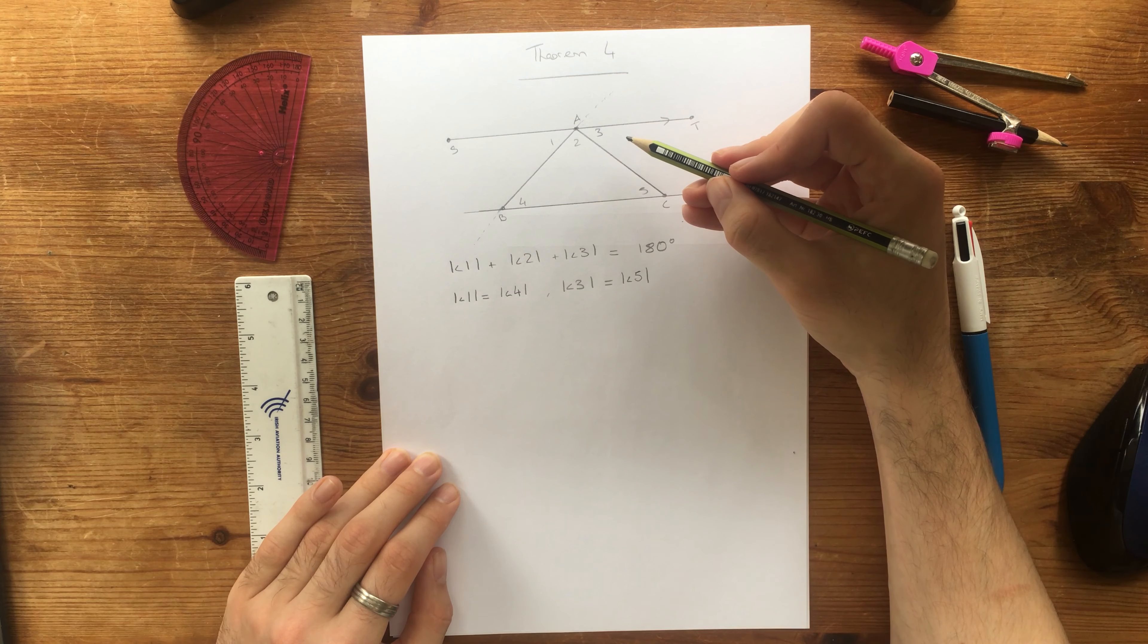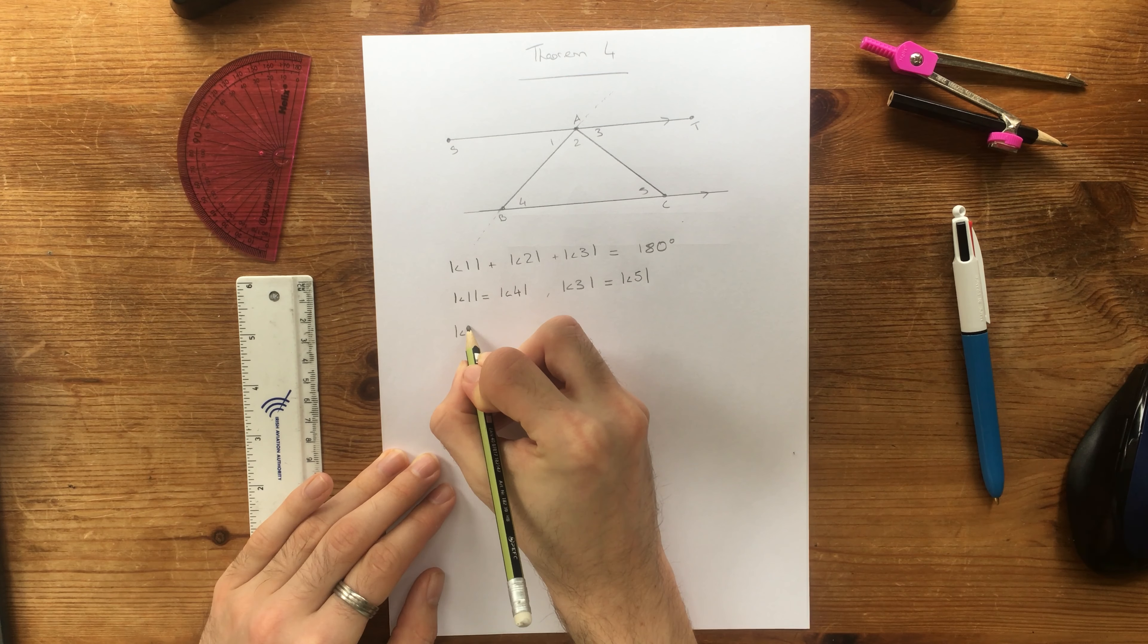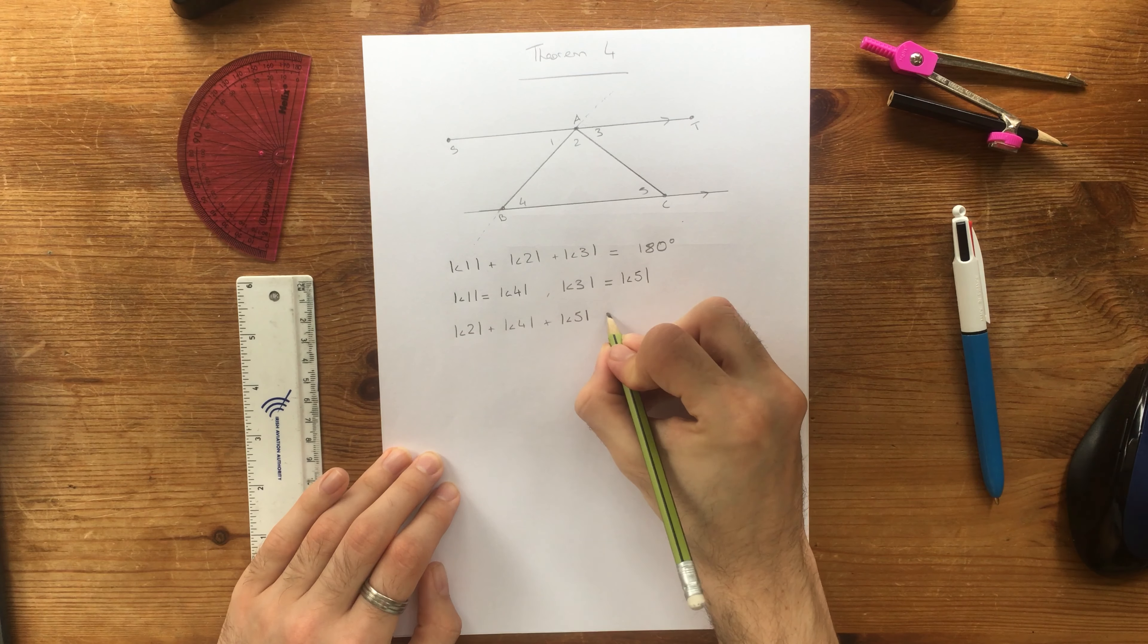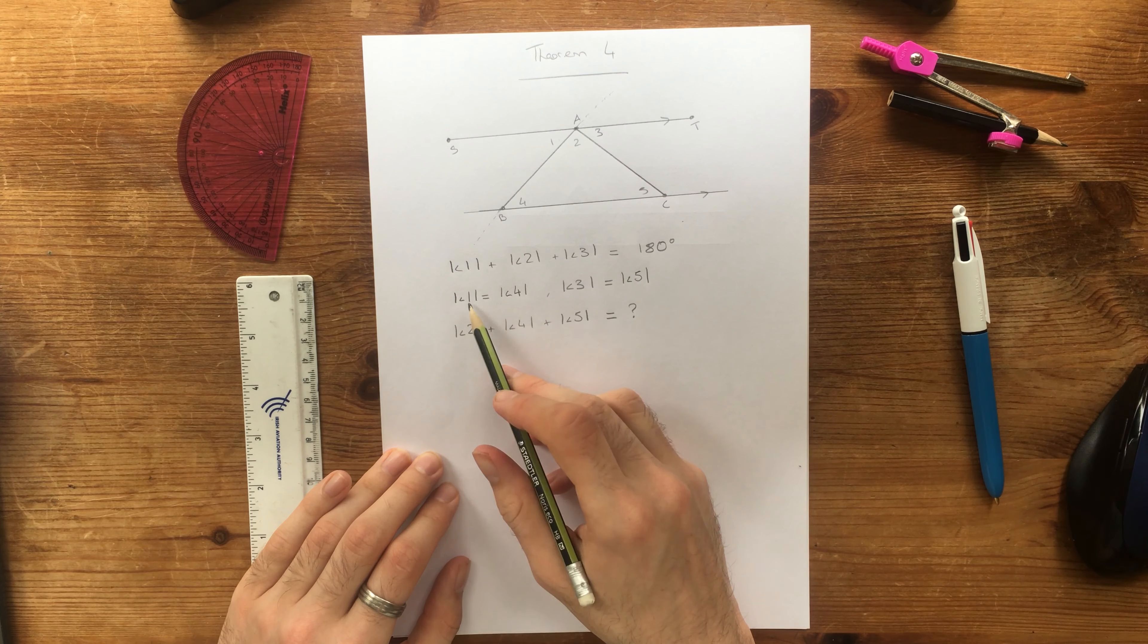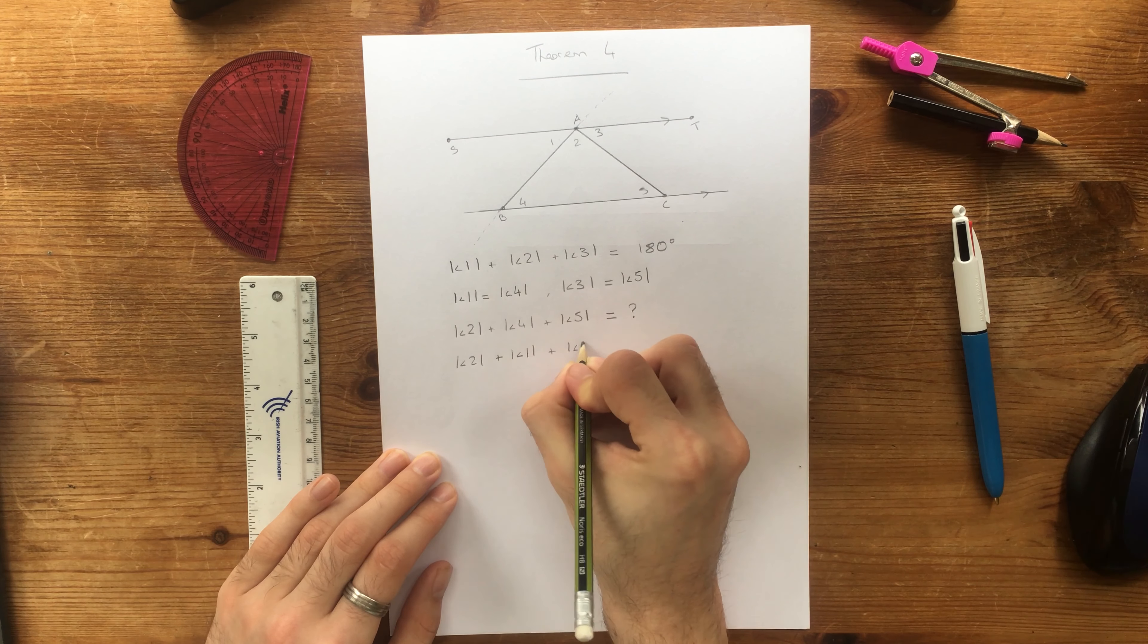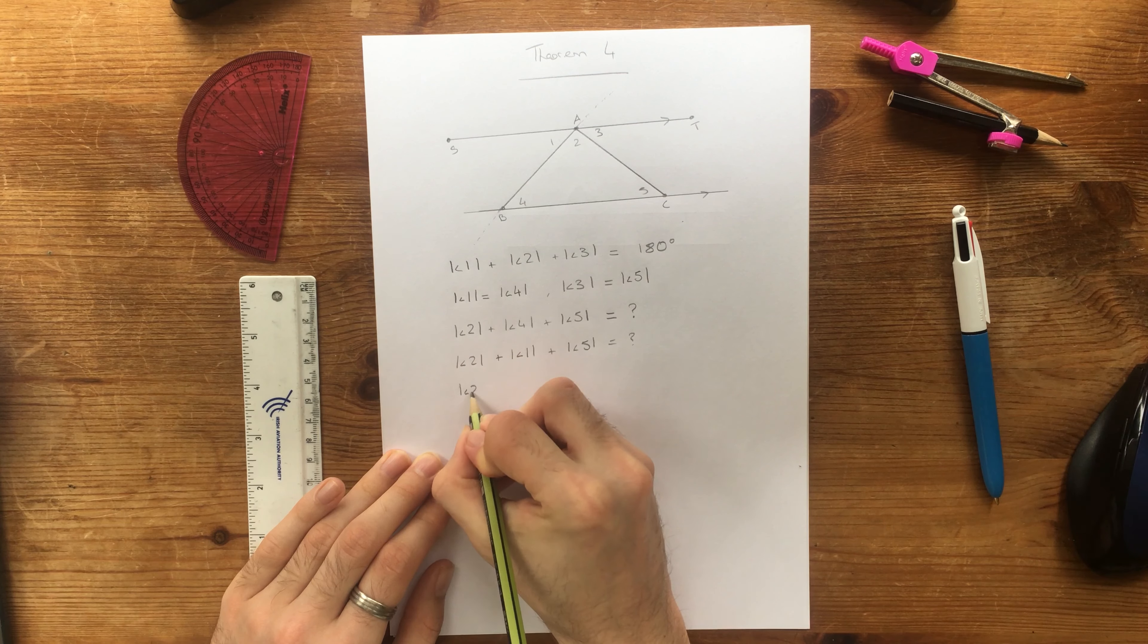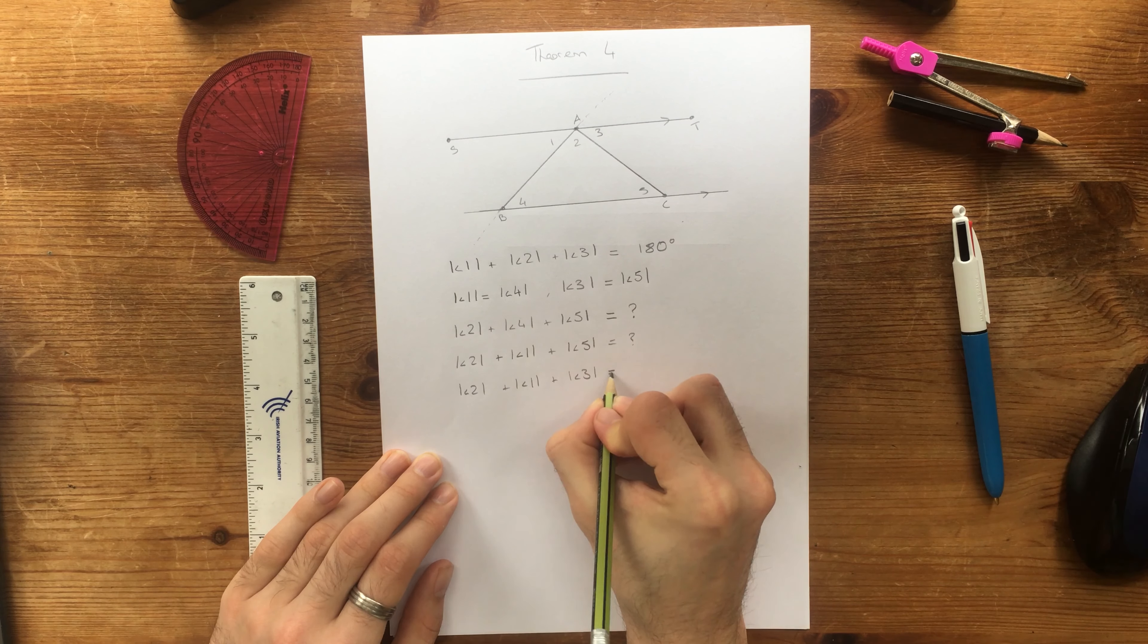So now that we have that, I want to ask you, what is angle 2, plus angle 4, plus angle 5? That's the question. Well, what do we know angle 4 is equal to? Angle 4 is equal to angle 1. So we're going to replace angle 4 with angle 1. And we worked out that angle 5 was actually equal to angle 3. So I'm going to replace angle 5 with angle 3. They're the same thing.